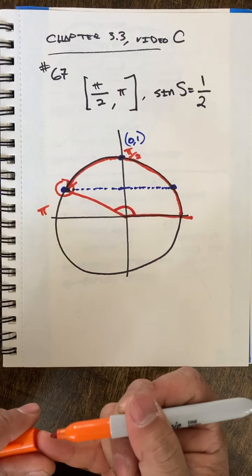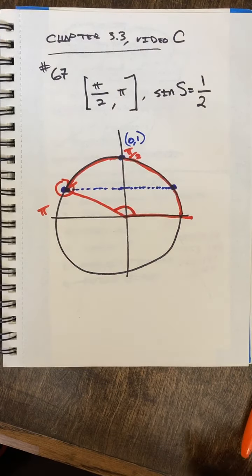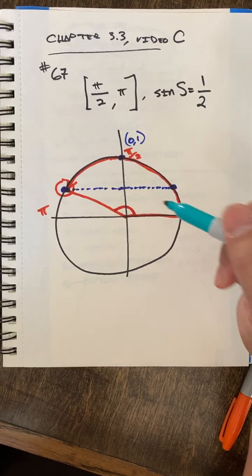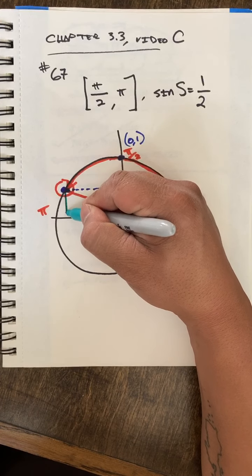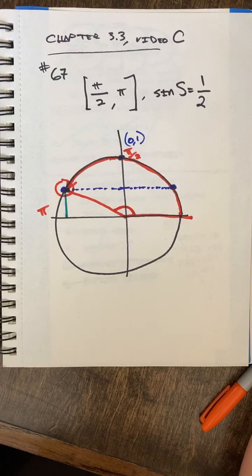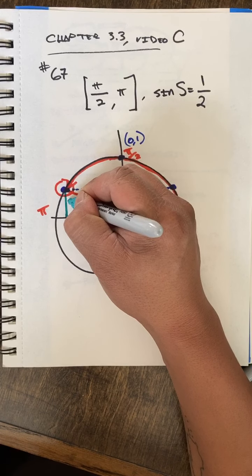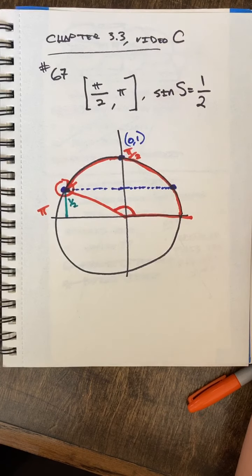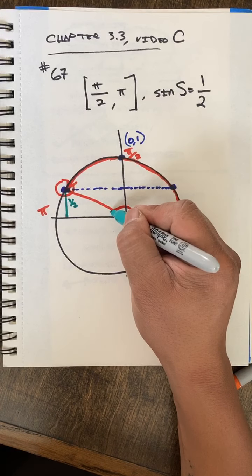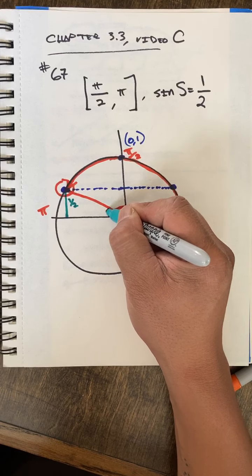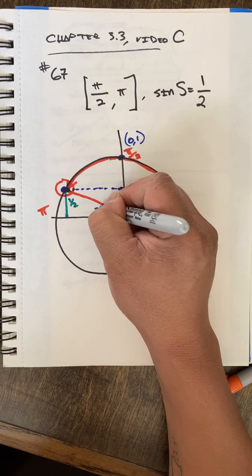I'm going to need a reference triangle for this and the reference triangle always goes towards the x-axis. In this case it looks like that. This is one half, that means this must be a 30 degree angle.